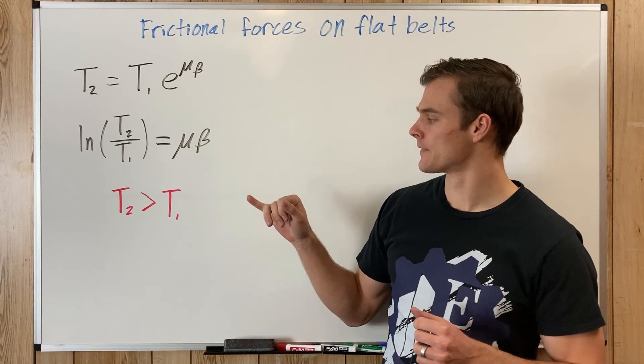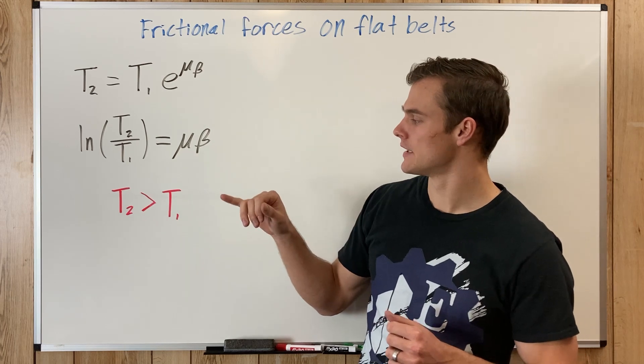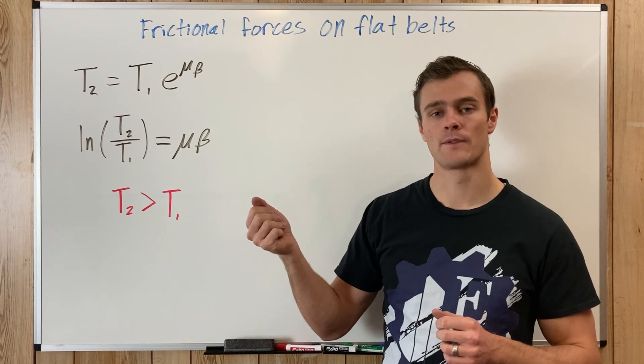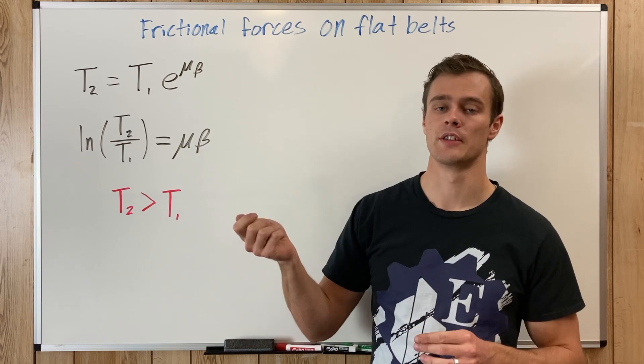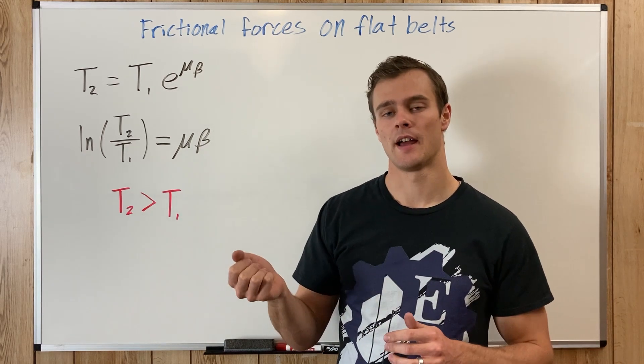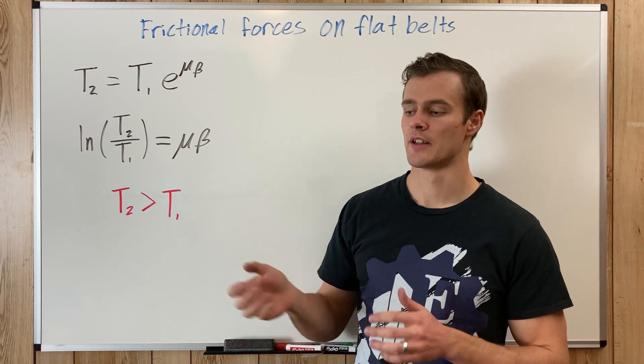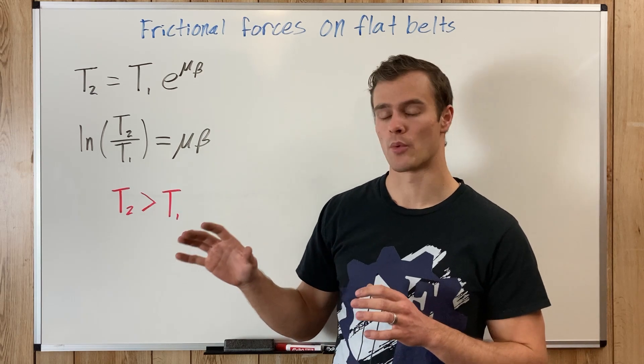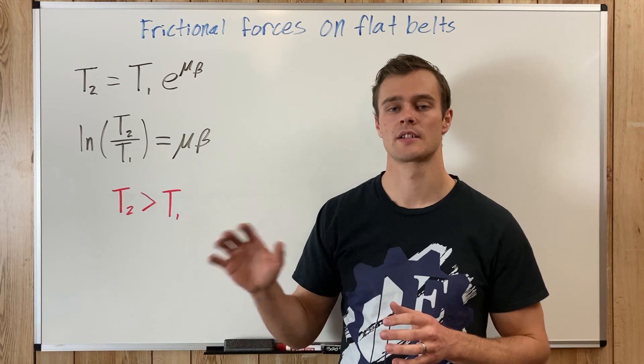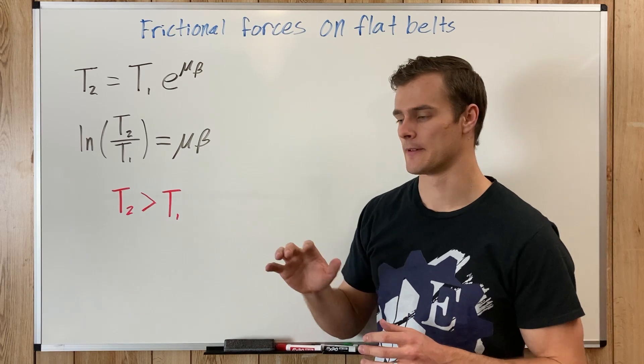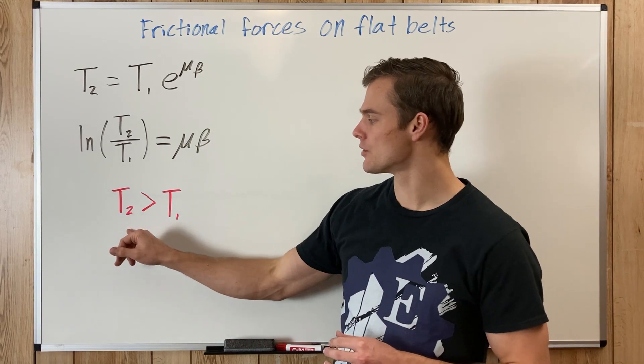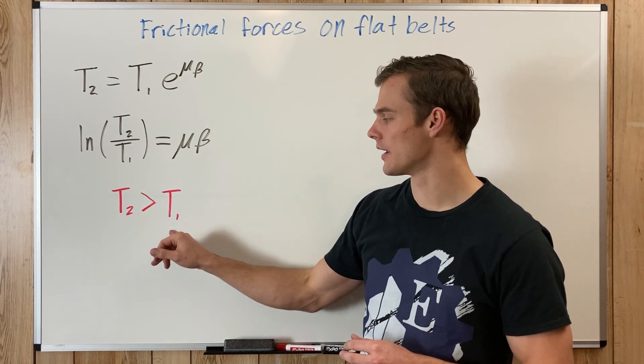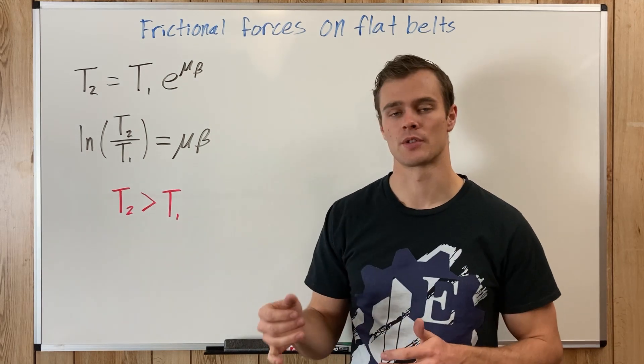T2 is the force in the direction of impending motion or in the direction of motion, depending on whether the rope or belt is going across the surface of the circular object. T2 is always going to be greater than T1 because of the frictional forces involved.